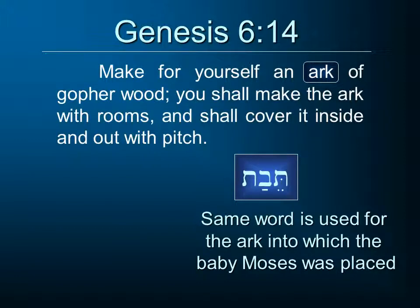Whatever view you take, we have next the Lord coming to Noah and saying, 'Make for yourself an ark' — the Hebrew word there is tiba — 'of gopher wood.' It's interesting that this is the same word used for the ark into which the baby Moses was placed. Literally it means a chest, a box — it might be a really big box like the ark of Noah, or a little tiny box into which baby Moses is placed. The instructions are: make for yourself an ark of gopher wood. That word 'gopher' also puzzled the translators, so they simply put the Hebrew word in English letters and left it at that.